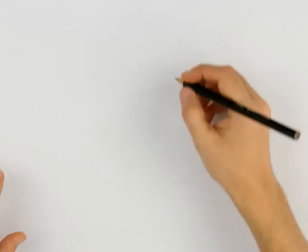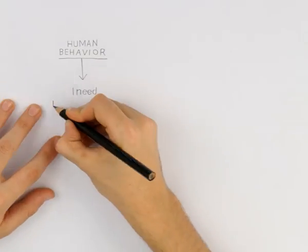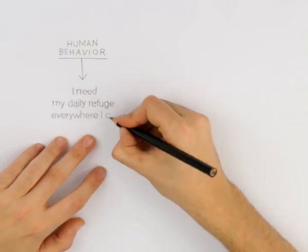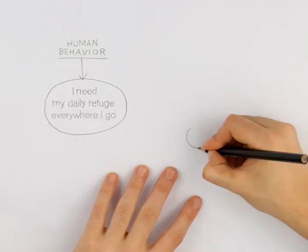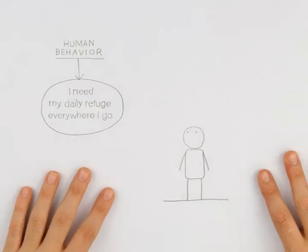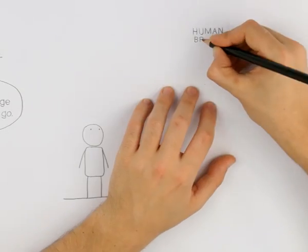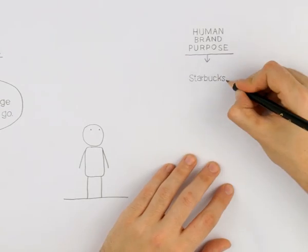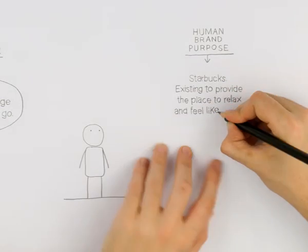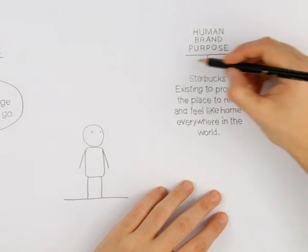Let's give some examples. The human behavior is like, I need my daily refuge everywhere I go. And the human brand purpose is Starbucks, existing to provide the place to relax and feel like home everywhere in the world.